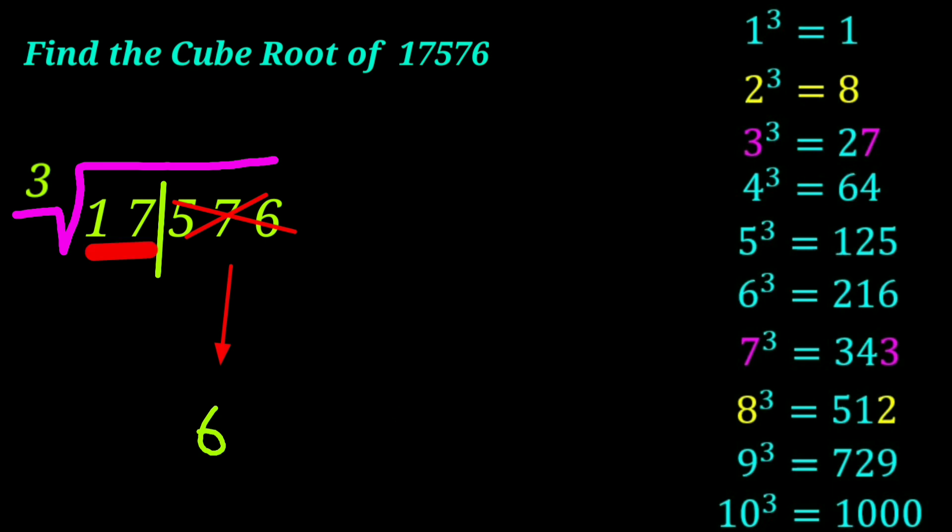Step two. Now we have seventeen. Check where that seventeen lies between in the cube numbers. Seventeen lies between eight and twenty-seven. Twenty-seven is greater than seventeen, so strike out twenty-seven.